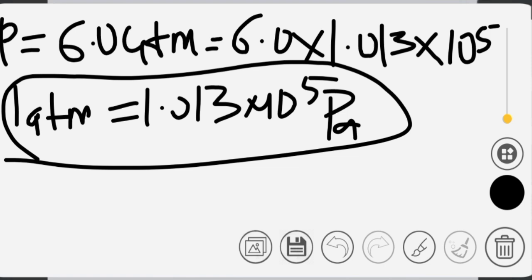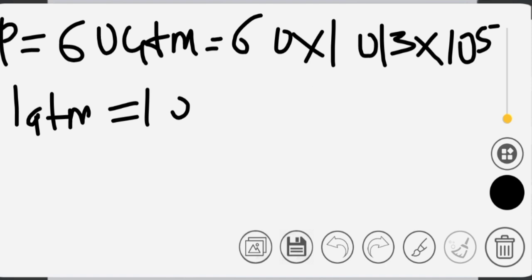We want to convert back to ATM, divide by this same value. We want to convert to pascal, multiply by this value from ATM. We want to convert back to ATM, we divide by this same value. That's how it is done. It's very important.